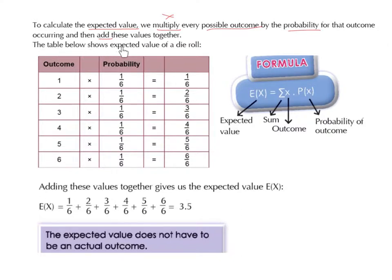The table below shows the expected value of a die roll. On a die we have 6 different outcomes that are possible: 1, 2, 3, 4, 5 and 6. So if our outcome is 1, it's going to be 1 multiplied by 1 over 6, because the probability of landing on a 1 is 1 over 6, which gives 1 over 6.